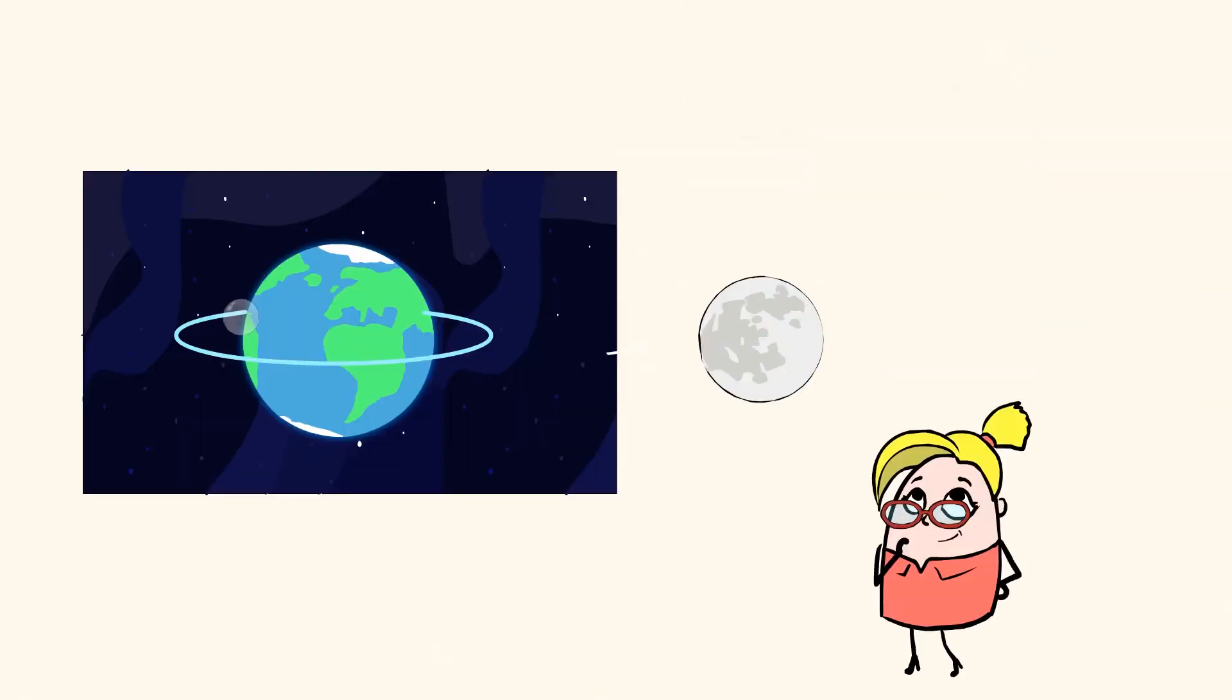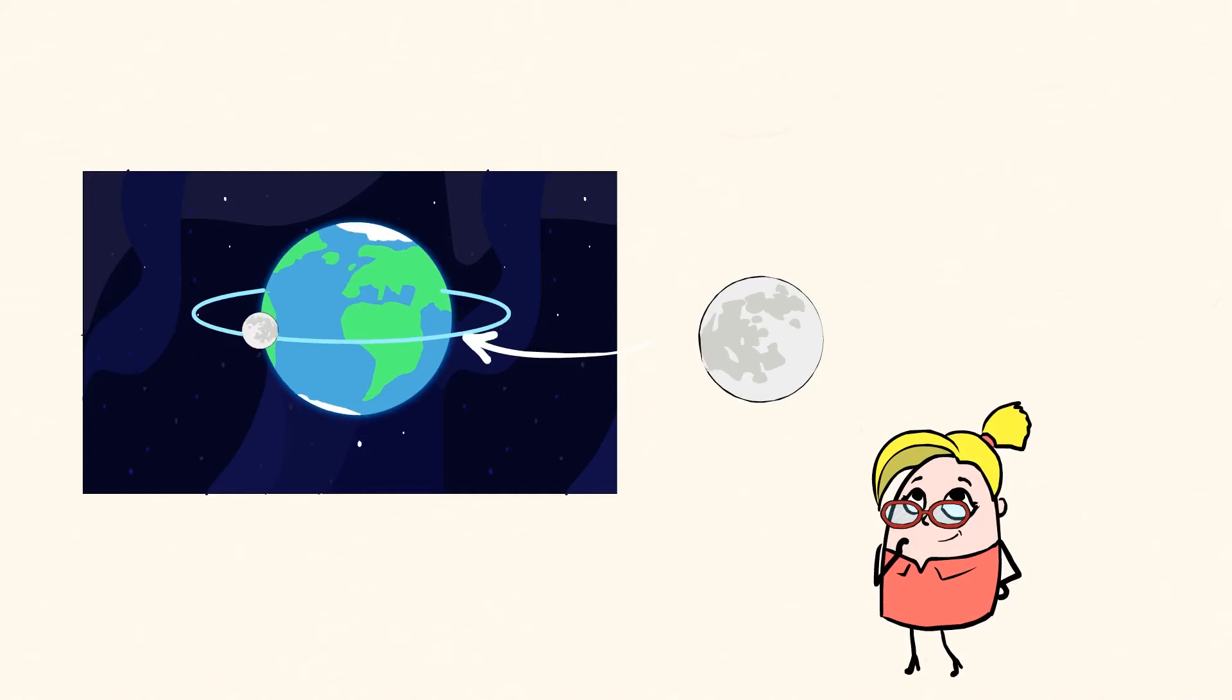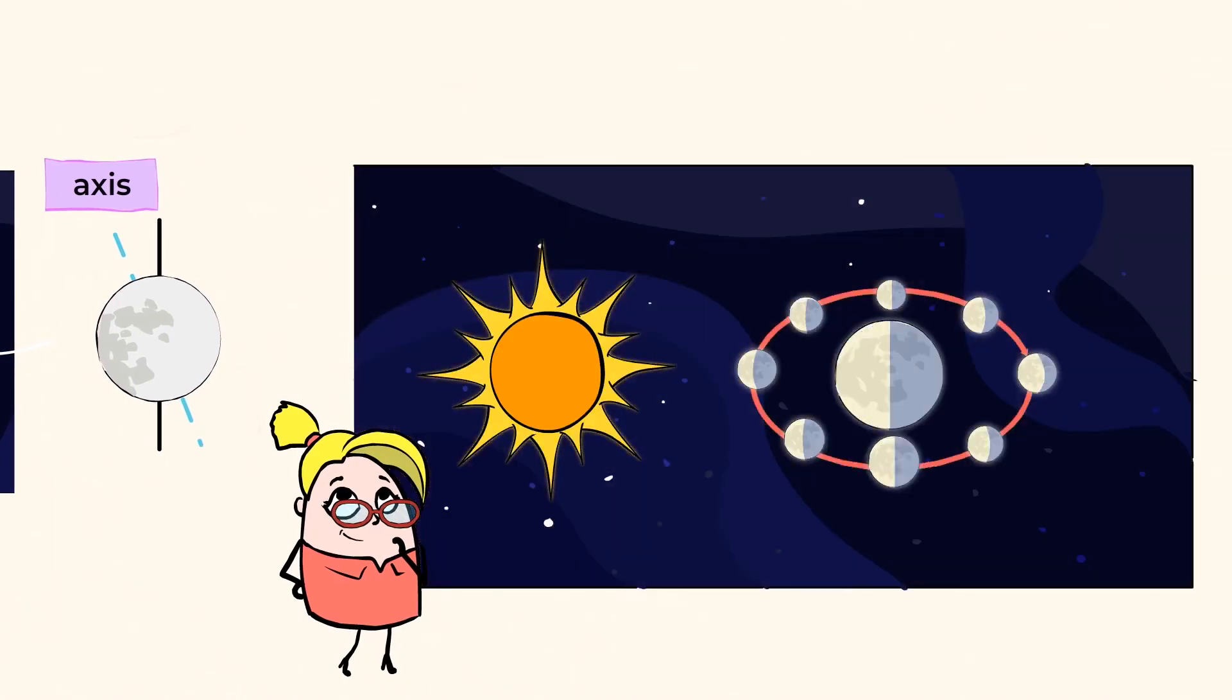The moon not only orbits our planet, but just like Earth, it also spins or rotates on its axis. The axis is an imaginary line that goes through the center of the moon. As it spins, different sides of the moon get lit up by the light of the sun.